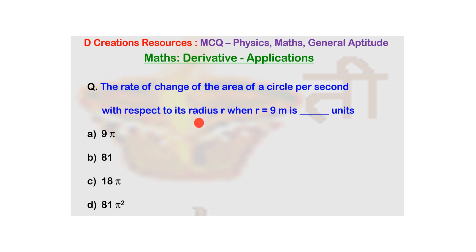And the options are: a) 9π, b) 81, c) 18π, d) 81π².